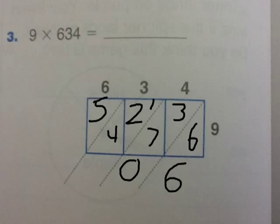So now you have 1 plus 2 plus 4, which is 7. And finally, the 5 comes down here. So the answer is 5,706.